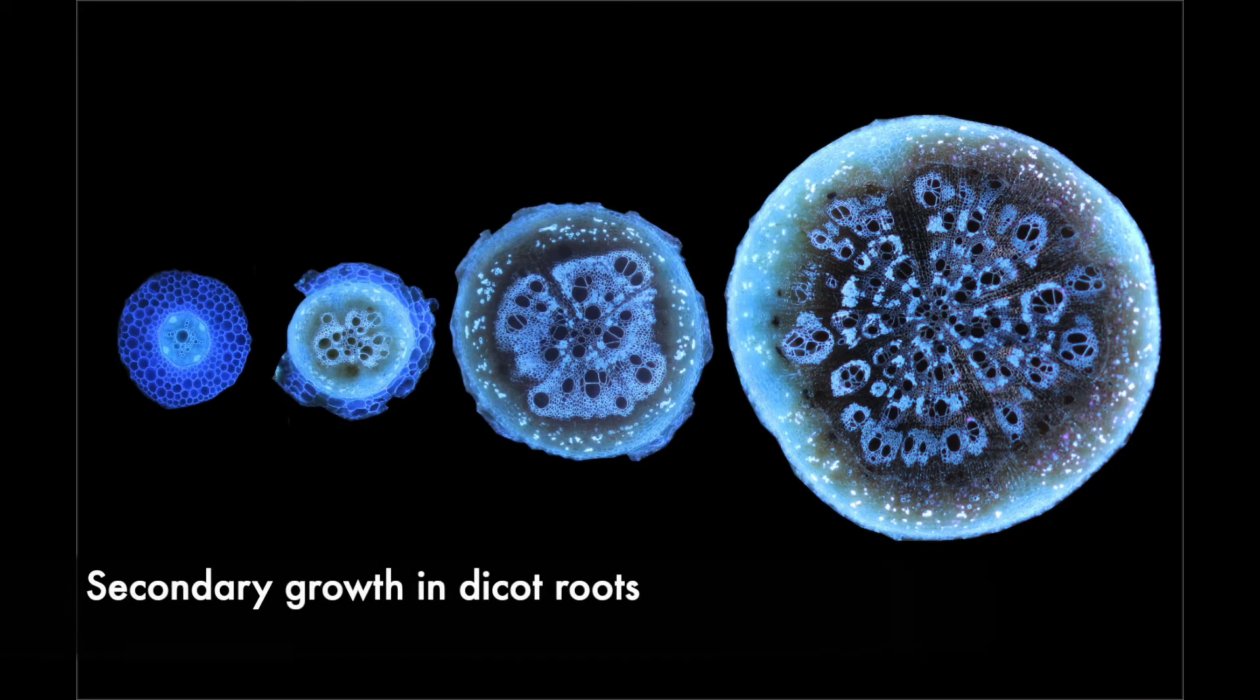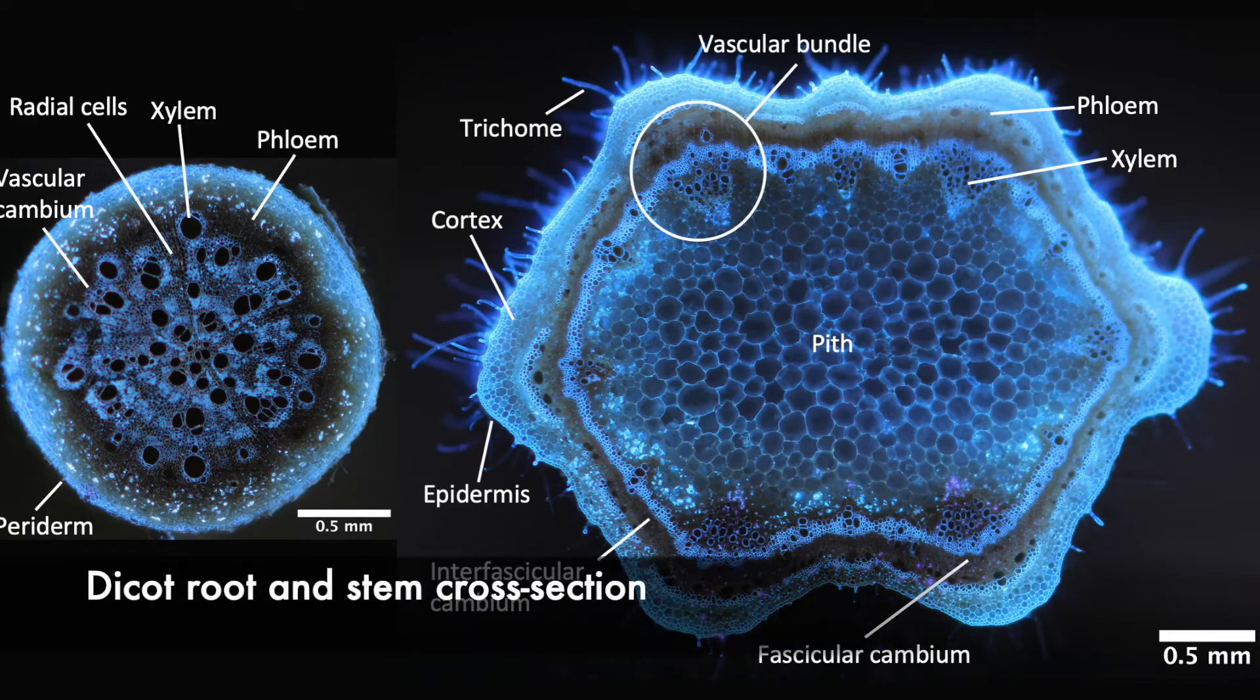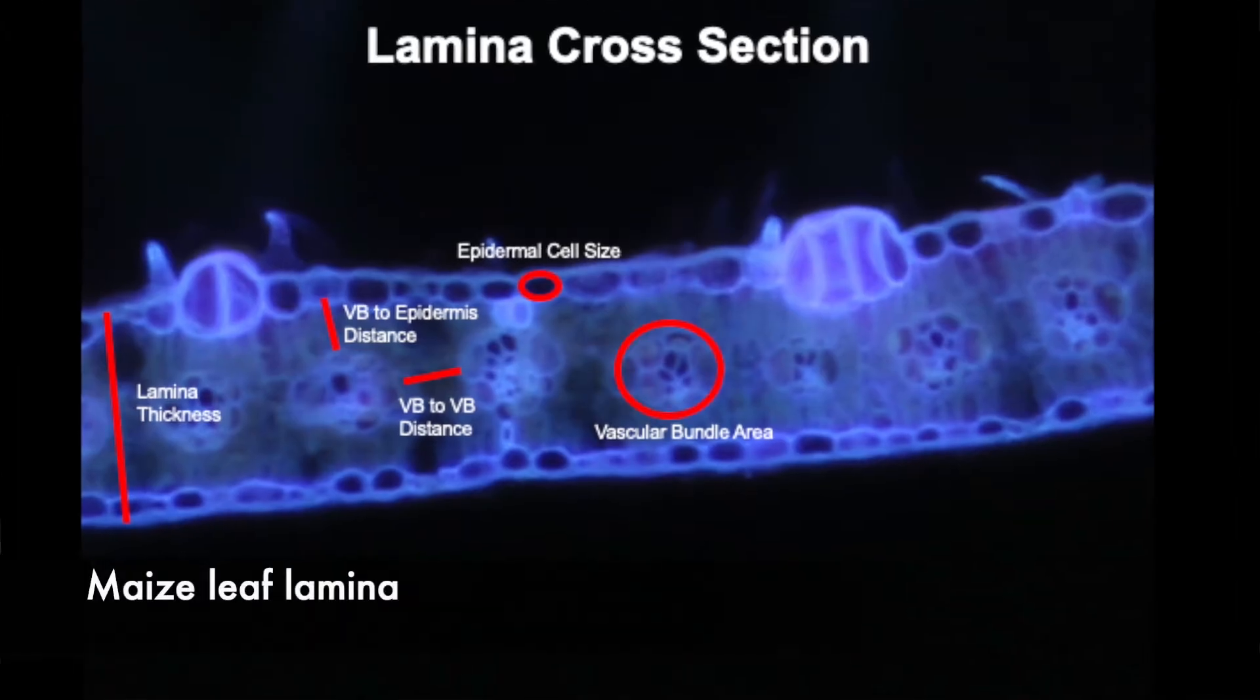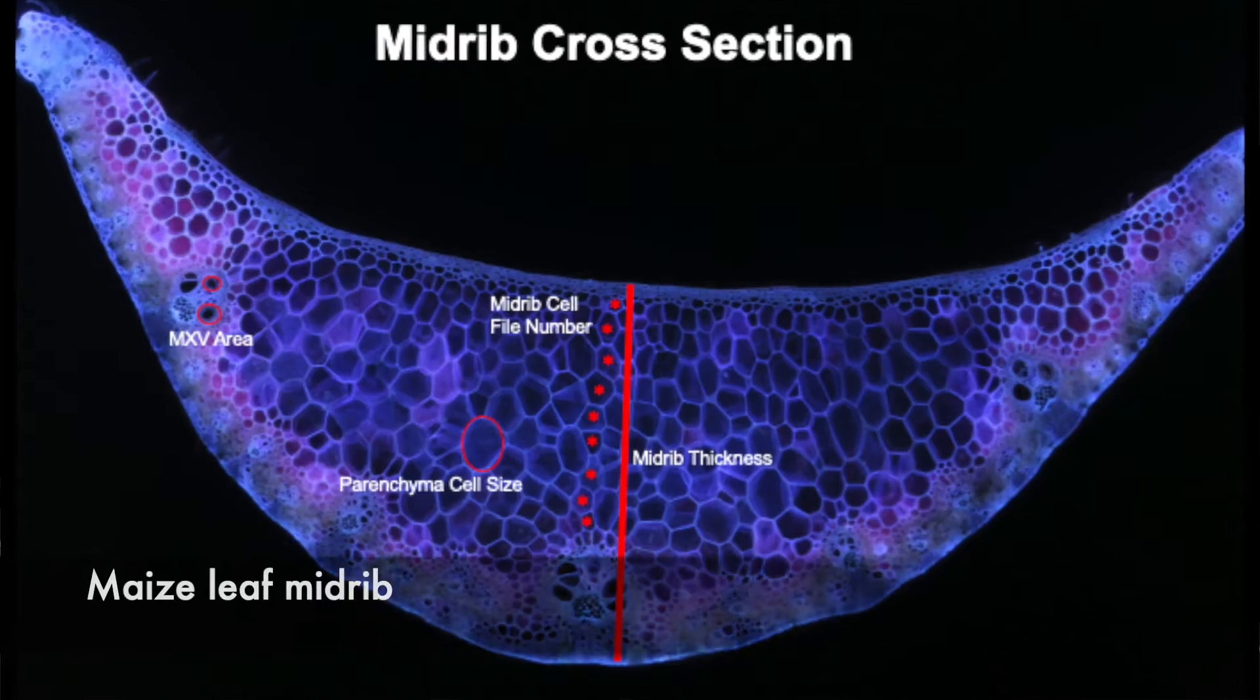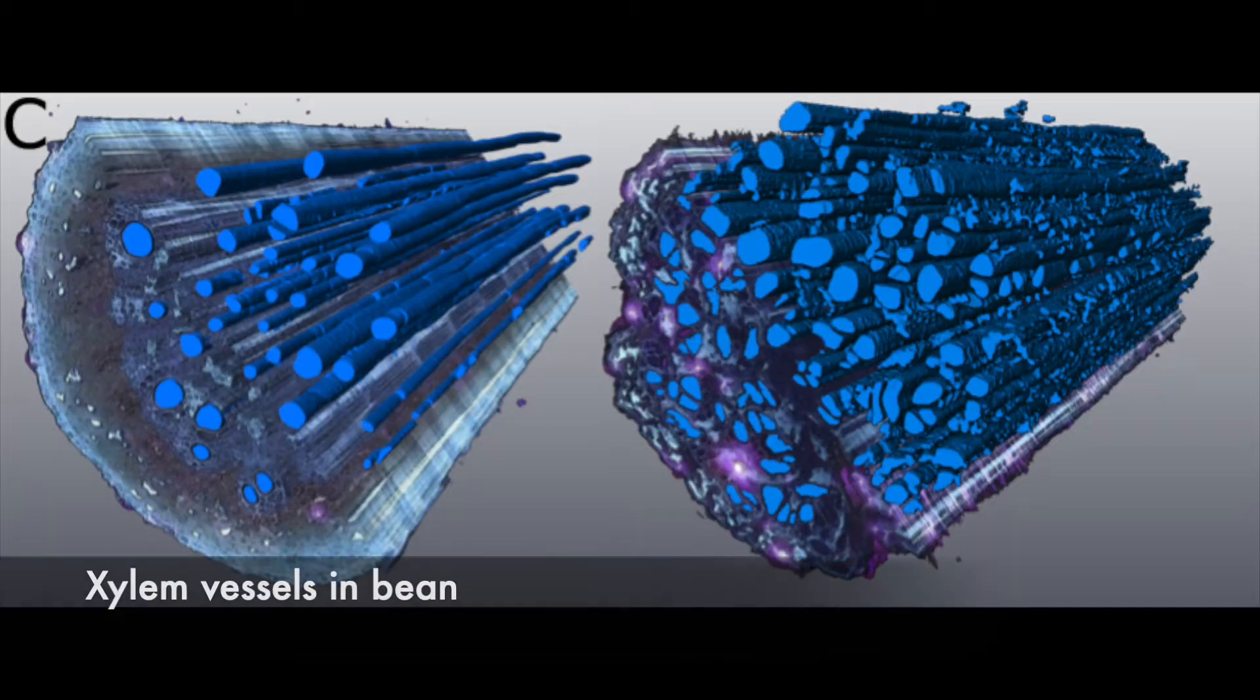and looking at different anatomical features specifically within the root system that can help these major crops in both acquiring and more efficiently utilizing important resources like water, especially under drought scenarios, as well as important macronutrients like nitrogen and phosphorus which can often be limiting in many agricultural soils.